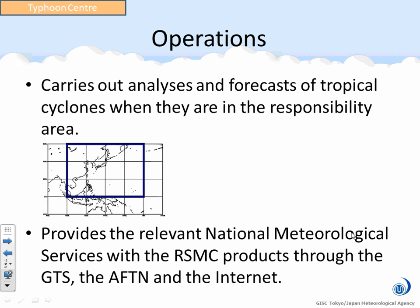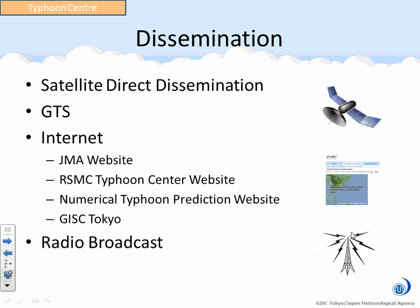The center provides relevant national meteorological services with RSMC products through the GTS and AFTN and through the internet. There are several dissemination systems to provide distributed products and advisory information of RSMC Typhoon Center. The major ones include direct satellite dissemination from MTSAT of satellite imagery, of course GTS, and file servers to provide numerical weather prediction model output. The website and radio broadcast as JMH accommodate the needs of boats and vessels.